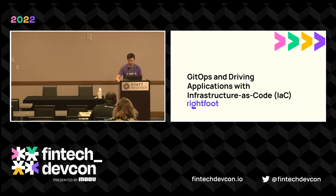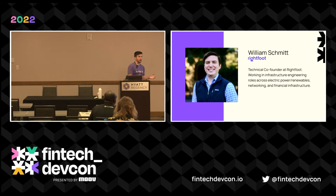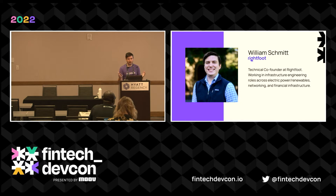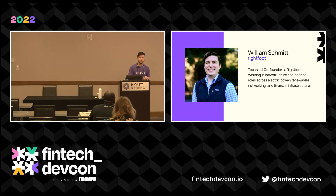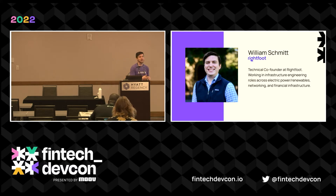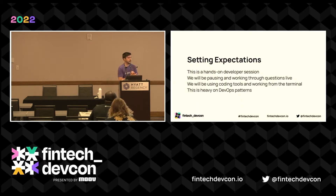My name is Will — full name William Schmidt. I'm technical co-founder at Right Foot, where I've been working for about three years full-time. My career has been through a number of different infrastructure engineering fields. I started in electric power working with Fortran, then moved into network infrastructure, and ultimately into financial infrastructure. I've always been passionate about what we can do on these lower layers of the stack, and topics like DevOps and making engineering organizations efficient and reliable.